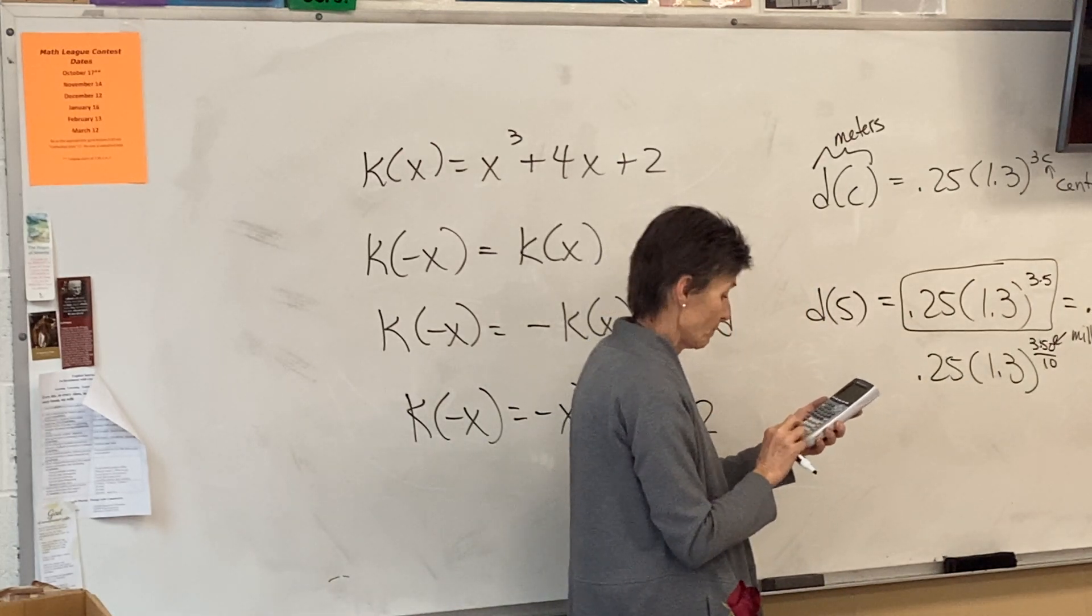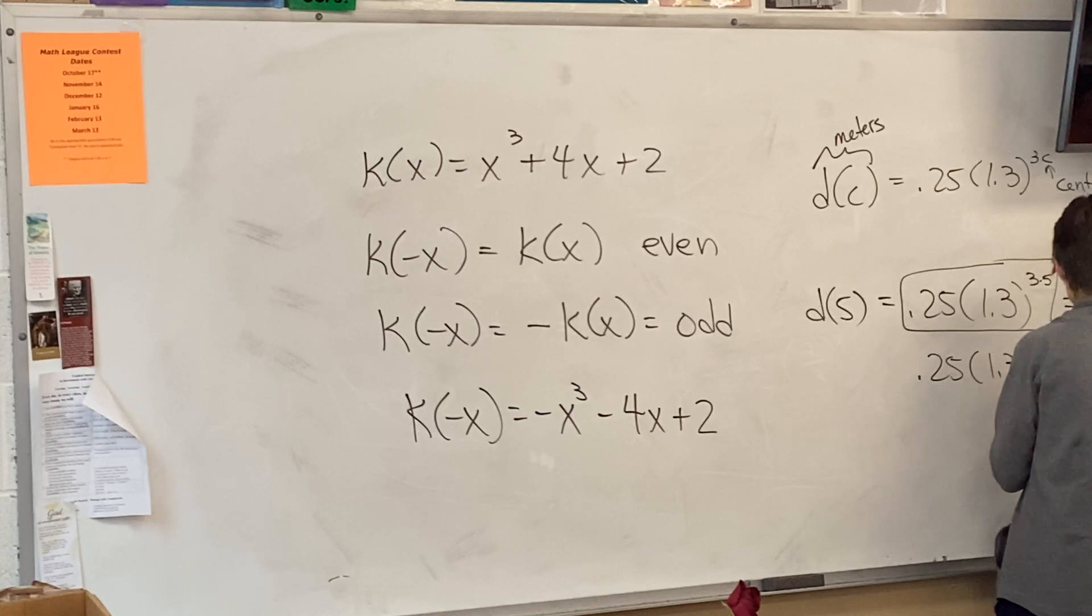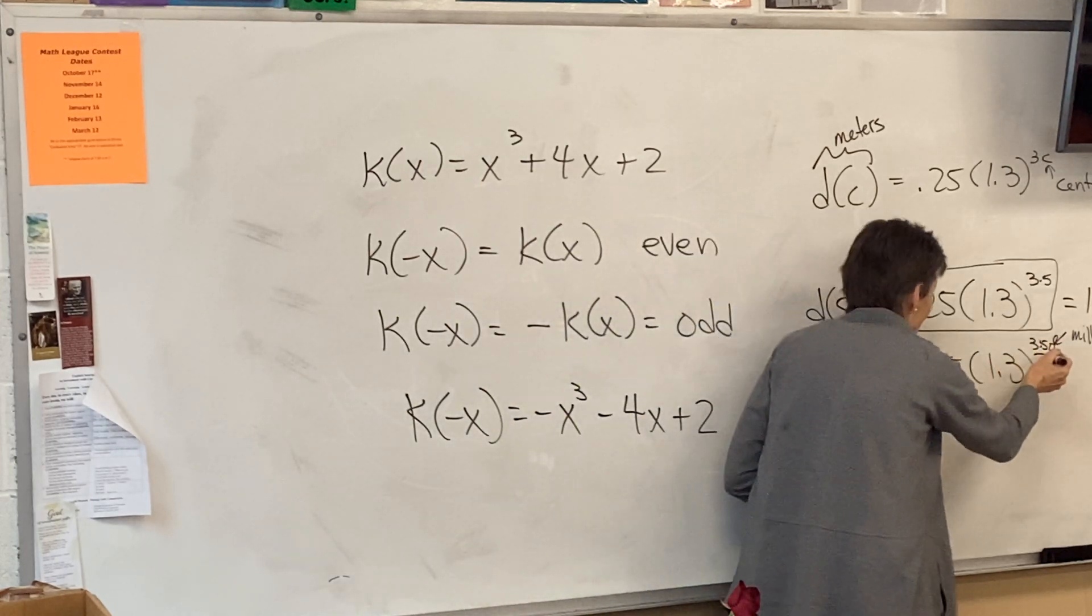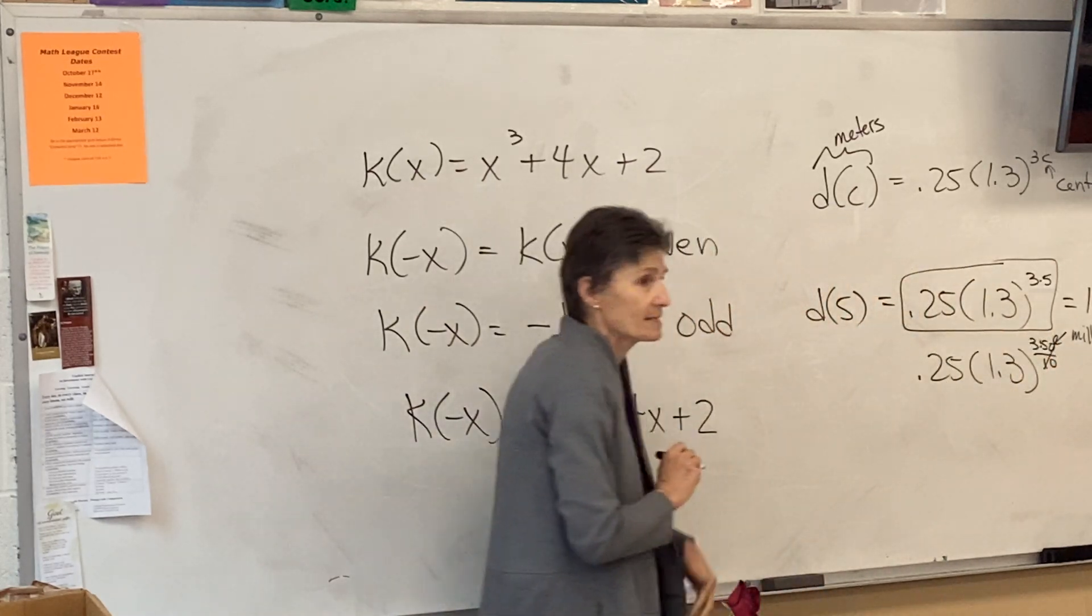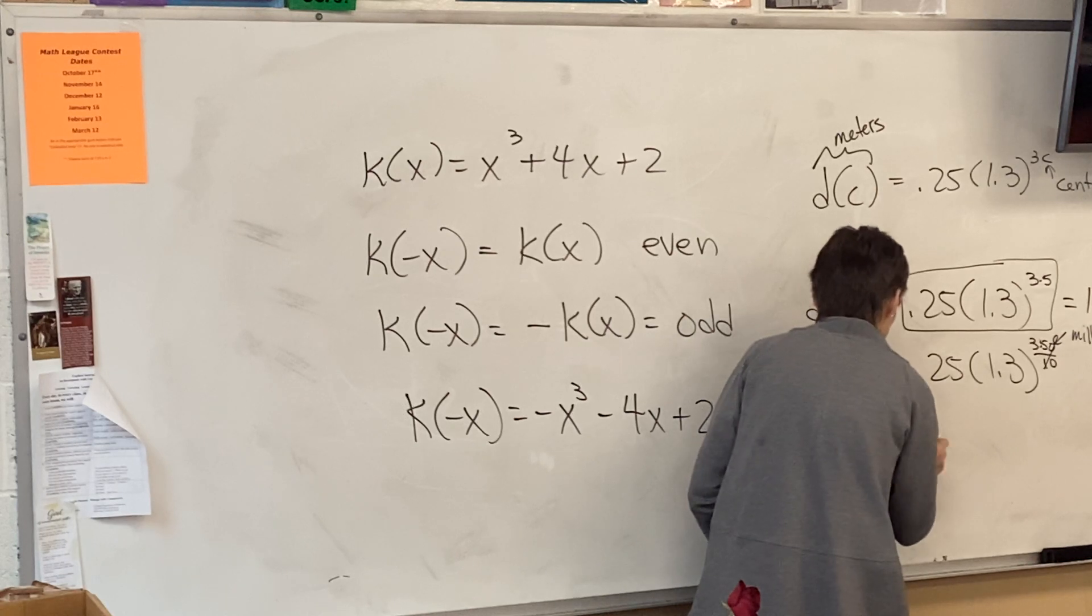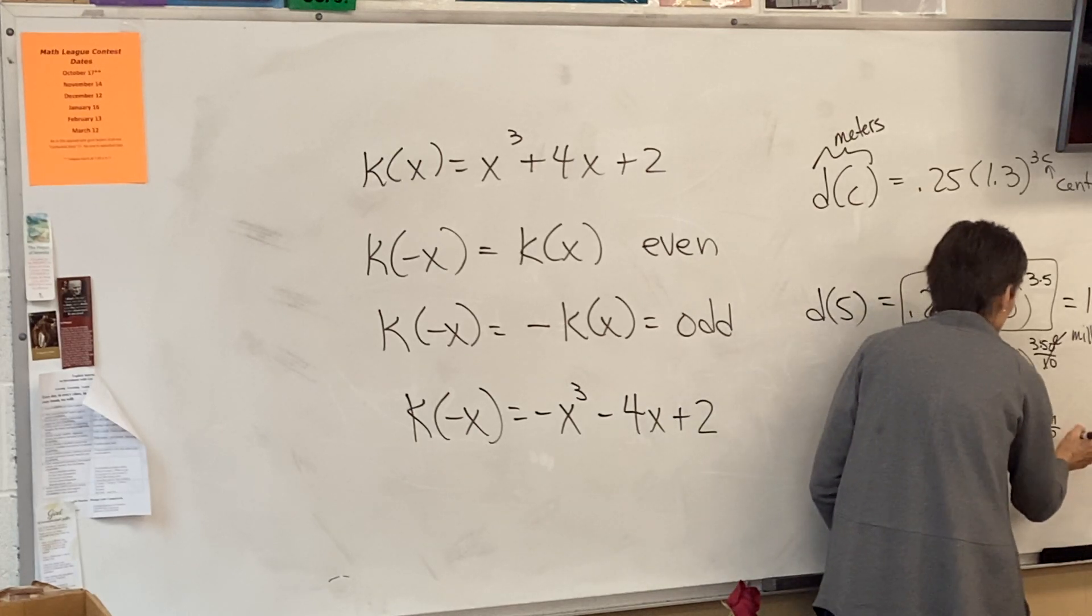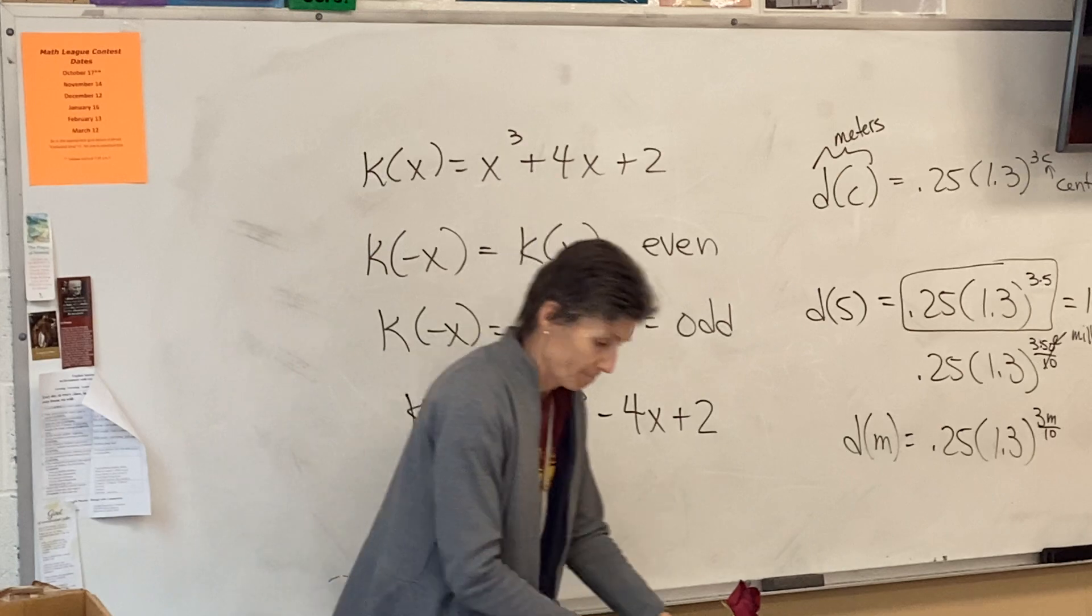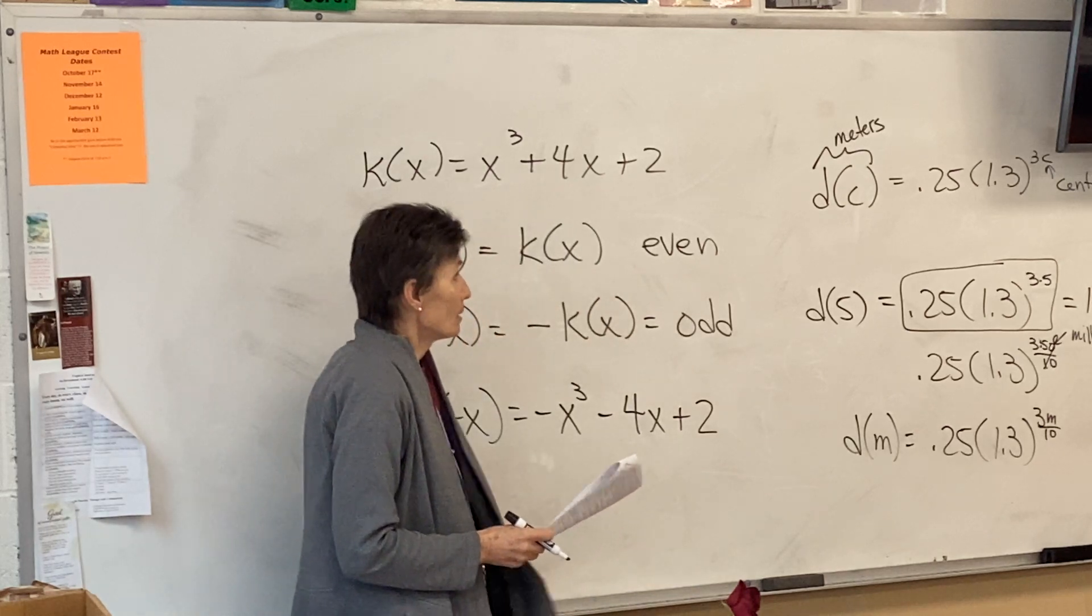0.25 times 1.3 to the 5th. Did you get 12.796? Yes. Yeah. That's the original equation, which didn't have a 10 in there. I stuck the 10 in there. So now, we're doing 50 millimeters, and it's going to be exactly the same calculation. Yeah. So this is the correct formula. D of M is 0.25 times 1.3 to the 3M over 10. Is that what I had? Yeah.